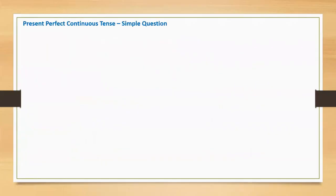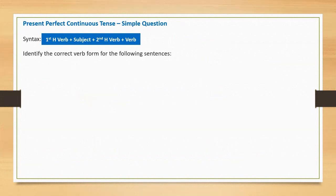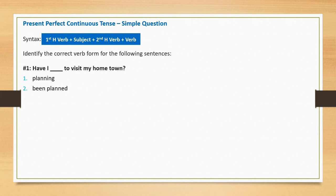Let's discuss present perfect continuous simple questions. Syntax: first helping verb plus subject plus second helping verb plus main verb. Sentence one: 'Have I blank to visit my hometown?' Option one: planning. Option two: been planned. Option three: been planning. Correct option: been planning. Full sentence: 'Have I been planning to visit my hometown?'